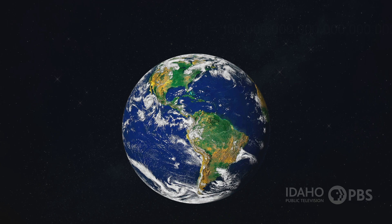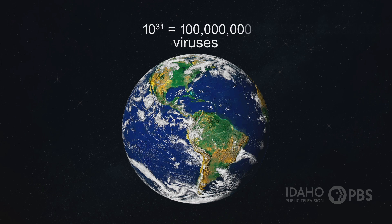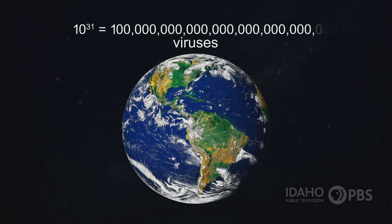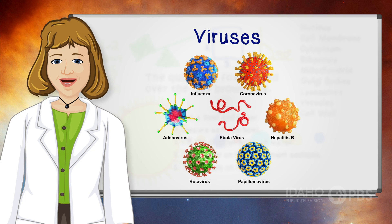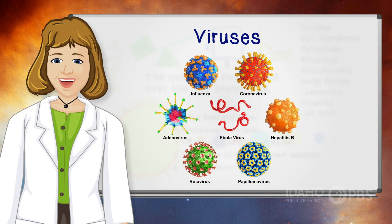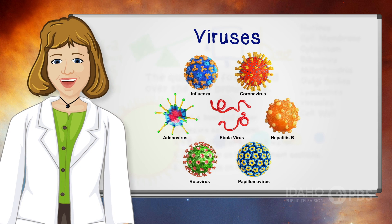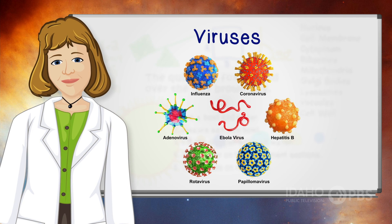Viruses exist everywhere. Scientists think the number of viruses on Earth are about 10 to the 31st power — that's 10 followed by 31 zeros. That's a lot of viruses. And because viruses have been around for a long time, they've made a lot of people sick.